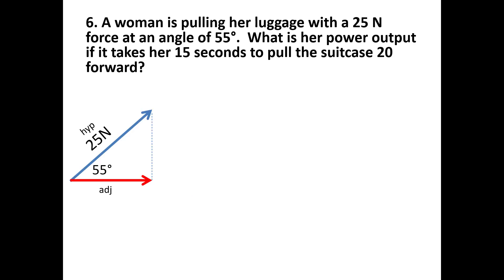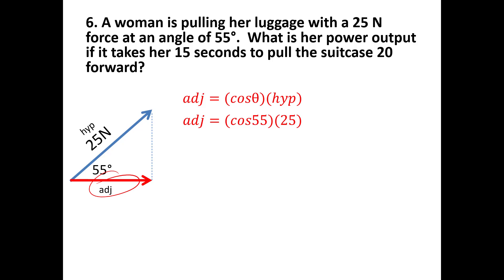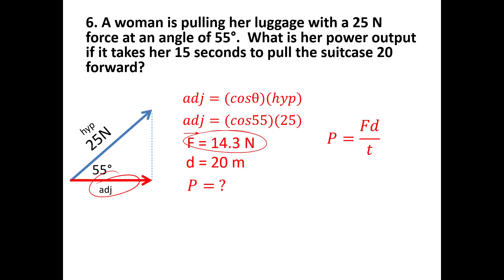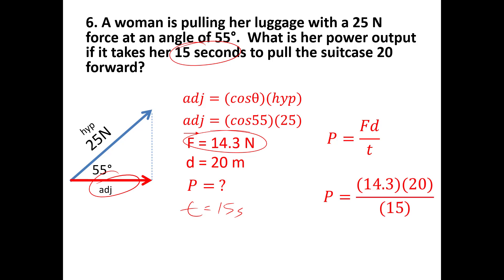Final problem: A woman pulls her luggage with 25 newtons of force at 55 degrees, taking 15 seconds to pull the suitcase 20 meters forward. Find the horizontal force component: cos(55°) × 25 = 14.3 newtons. The steep angle means only a small portion of force goes into motion. Then use P = FD/t: P = (14.3 × 20)/15 = 19.07 watts.